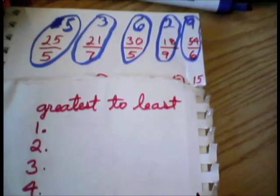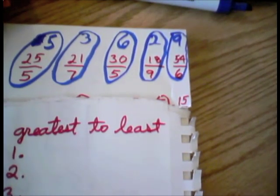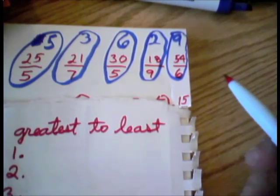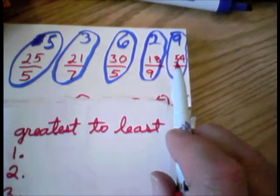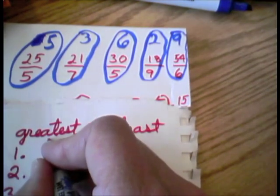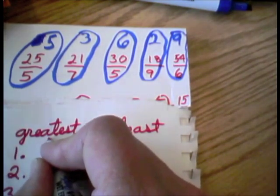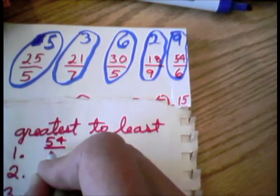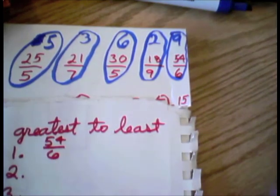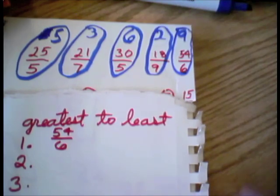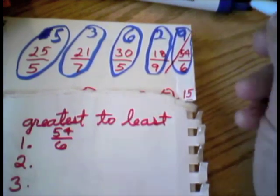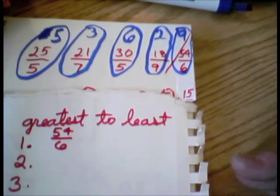So, out of those, which is the biggest value? 54 6, 18 9ths. Tyler, which is the biggest value? 54 6. Because 54 6 equals 9. So, that's the greatest value. Then we use process of elimination. We put a little line through there so we don't worry about it.